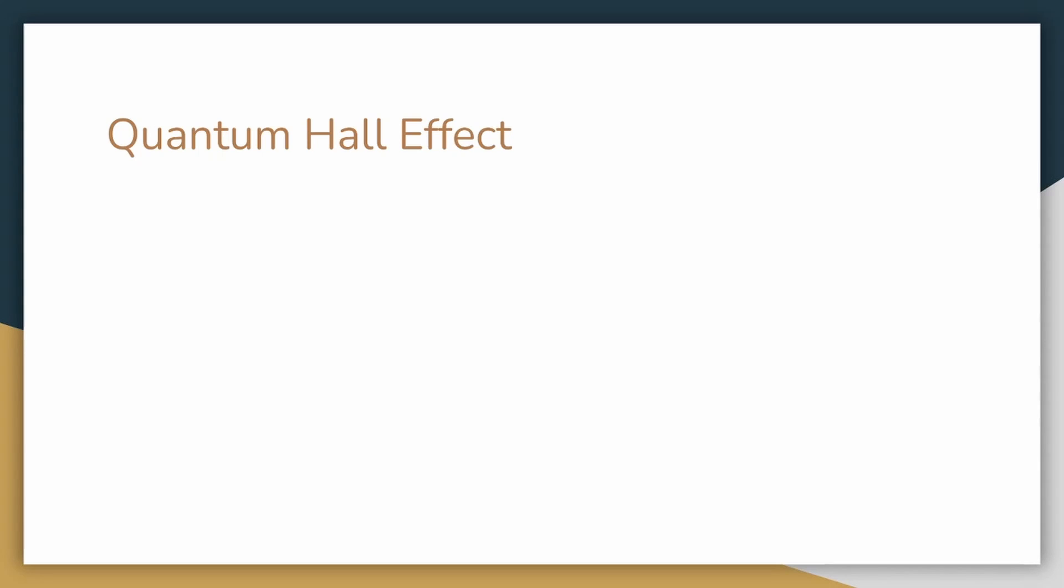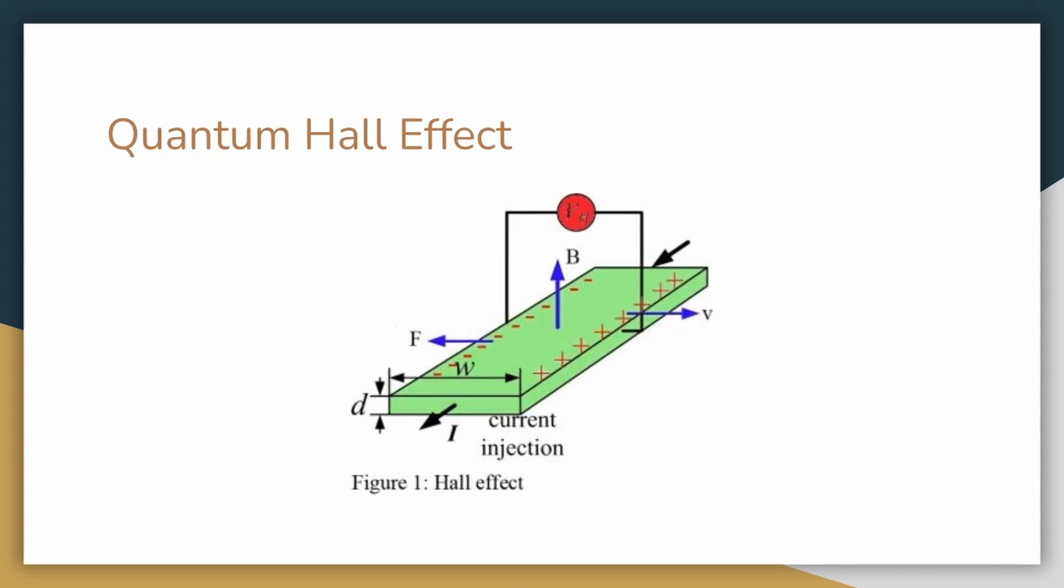It started with an experiment that proves that Hall resistance can be quantized and named the quantum Hall effect. In a standard Hall experiment, a current is applied and material is placed in a magnetic field. Then, the moving charged particles deflect due to the magnetic field, producing an electric potential that can be measured.